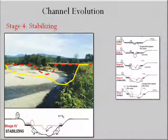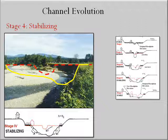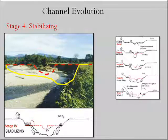Stage four of the evolution process is the stabilizing stage, in which increasingly large bank failures result in increasing amounts of sediment input to the river, overwhelming the flow power and resulting in the development of large gravel bars that begin to narrow the channel.